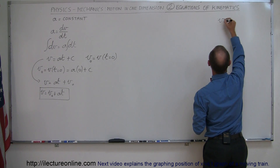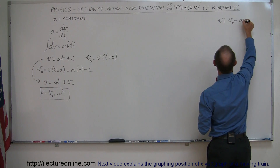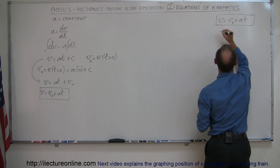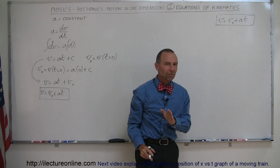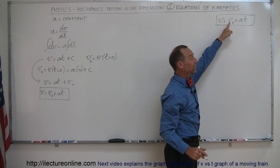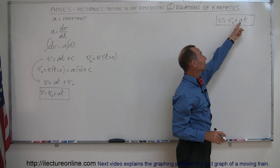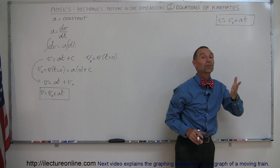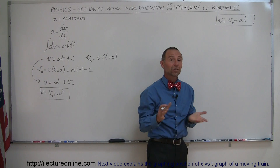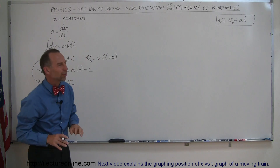The first equation of kinematics says v equals v-naught plus at. This means you can calculate the velocity of any object as long as you know the initial velocity when time equals zero, how fast it's accelerating, and how long it has been accelerating. Then you can find the velocity at any time. We'll see examples of that later.